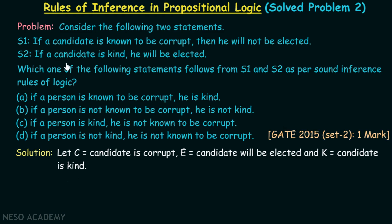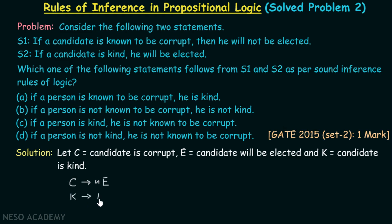According to statement S1, if a candidate is corrupt, he will not be elected — that is, C implies not-E. According to statement S2, if a candidate is kind, he will be elected — that is, K implies E.